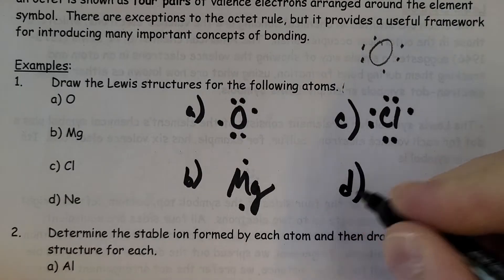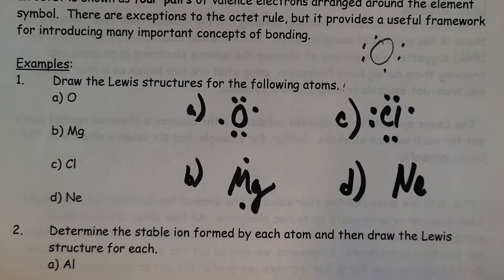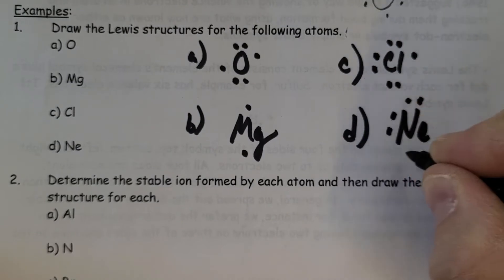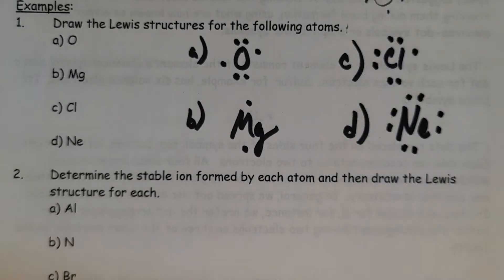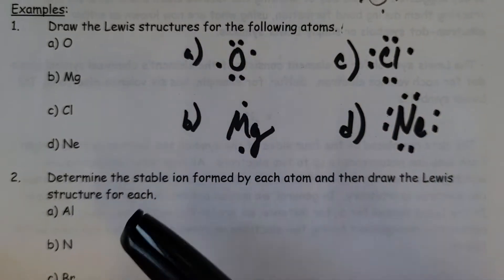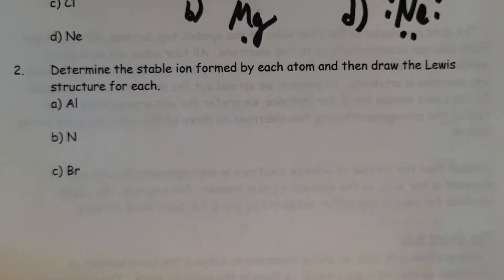And neon, of course, is a noble gas, so yes, it would have eight valence electrons, so its area would be entirely full. So easy easy peasy right there. To determine the stable ion, okay, so we're going to look at what is the atom going to do to become stable.